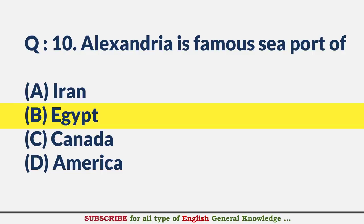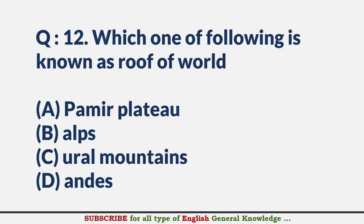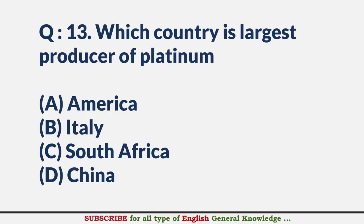Day of Happiness is celebrated on? — Answer A: 20 March. Which one of the following is known as the roof of the world? — Answer B: Pamir Plateau. Which country is the largest producer of platinum? — Answer C: South Africa.